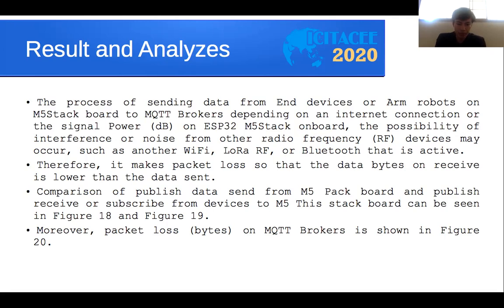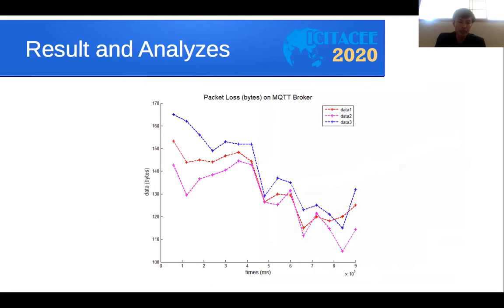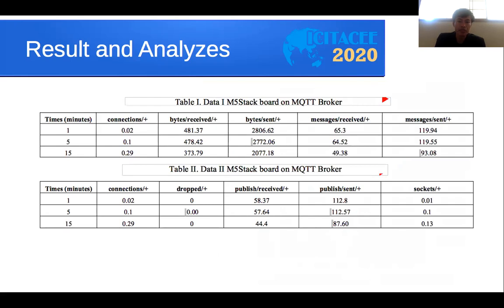The packet loss in this case is shown by the MQTT broker in the figure. From three experiments, data one, data two, and data three were collected, along with subscribe one, subscribe two, and subscribe three — upon the publish and received data on the MQTT broker. This data was obtained from the internet MQTT dashboard broker, and packet loss data was extracted. The table shows the full data on connections by send, by receive, and the publish-send and publish-receive on the MQTT broker socket.